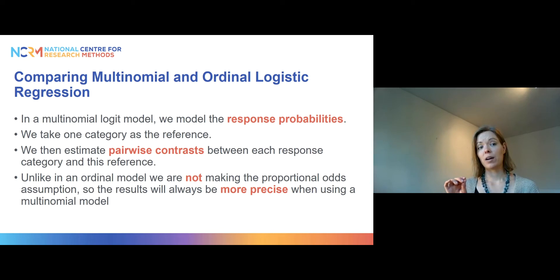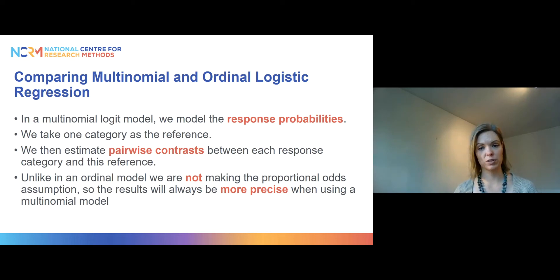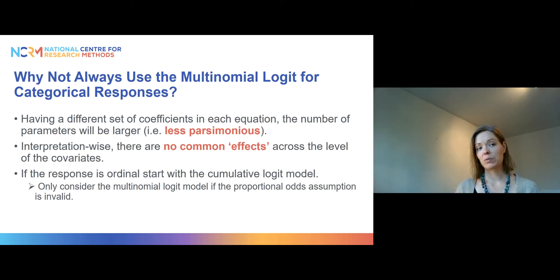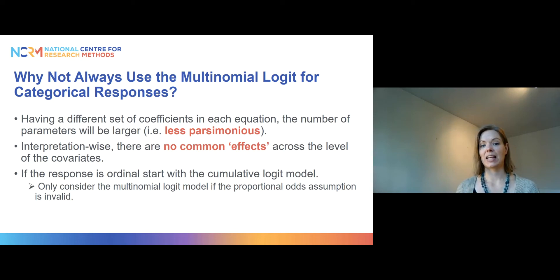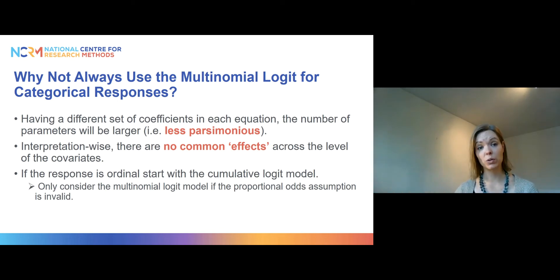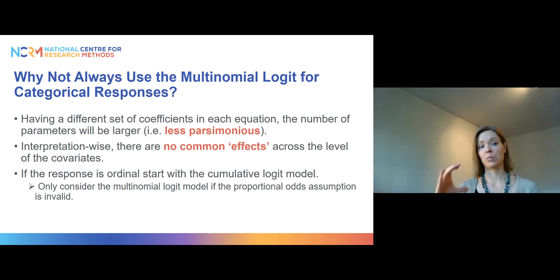Unlike in an ordinal model, in a multinomial model we are not making any assumptions about whether the slopes are the same or different across the different categories of the outcome — they can be parallel or very different from each other. This means that a multinomial model will always give you more precise estimates than an ordinal model because we are making fewer assumptions. You might wonder why we would ever bother with an ordinal model. Well, in statistics we normally try to find the best possible model that is as parsimonious as possible, keeping the number of parameters as small as possible. If there is a model that can get good estimates with fewer parameters, you normally go for that, even if it means a slight loss of precision.